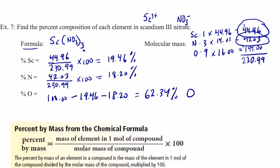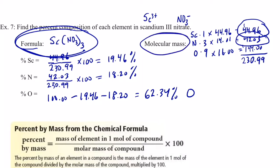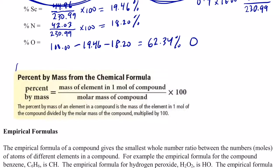Remember: the first thing you need to do is write the formula if it's not given, then find the weight of the compound, and then simply find the percentage by mass of each element in that compound — just like we did here. Here's a little formula for your notes.